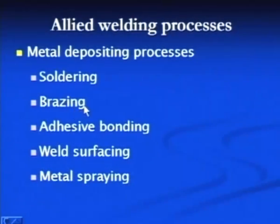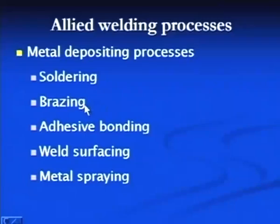The strength of the joint produced by soldering is low and unsuitable for high temperature applications. In brazing, filler metal — mainly a copper base alloy — is applied near the heated base metal surfaces to be joined. Similar to soldering, the molten filler metal is sucked inside by capillary action to produce the joint on solidification.